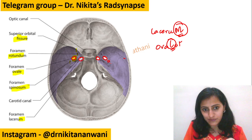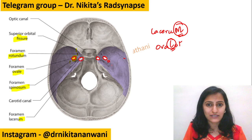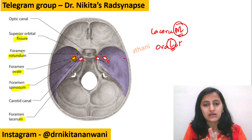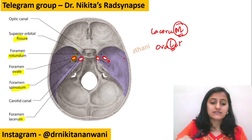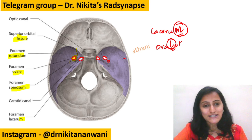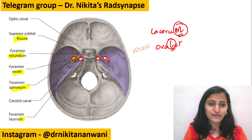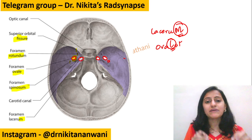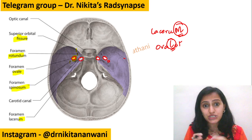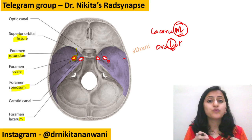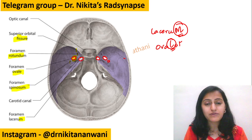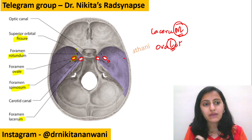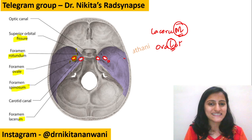Behind ovale is where we have spinosum. Spine in the middle — middle meningeal artery passes through foramen spinosum. So a question for you: do let me know in the comments — middle meningeal artery rupture leads to what kind of hemorrhage, and what is the appearance and shape on CT scan?